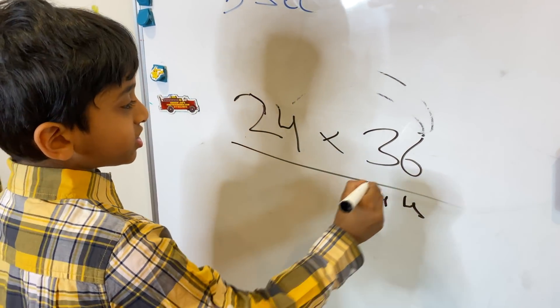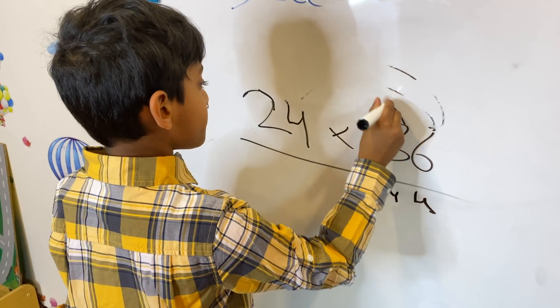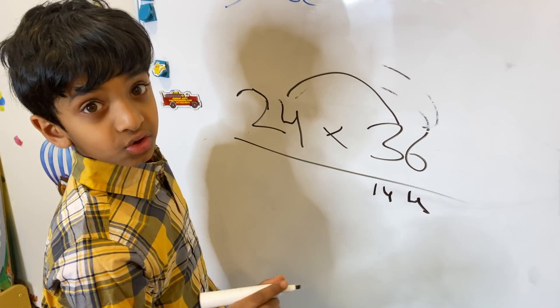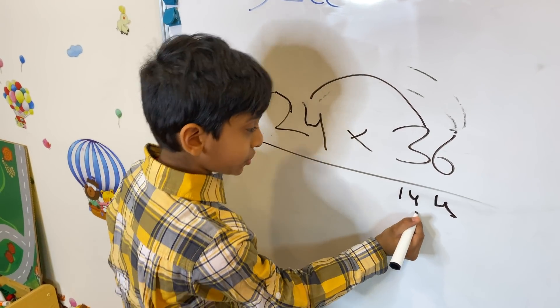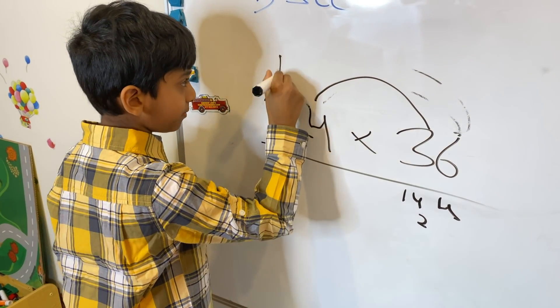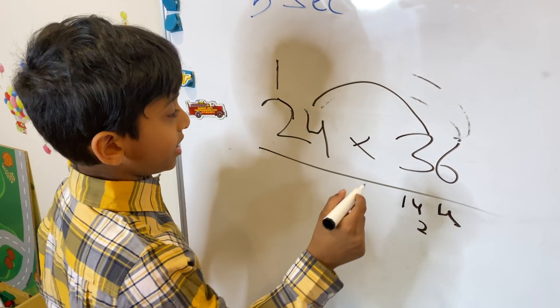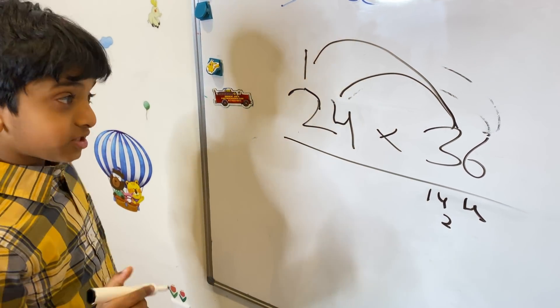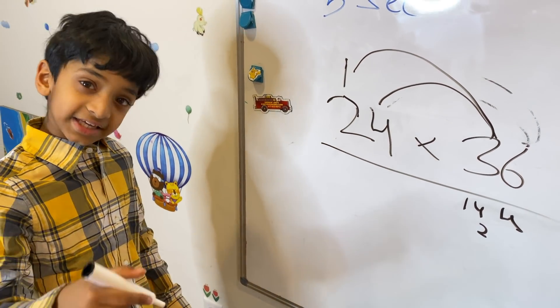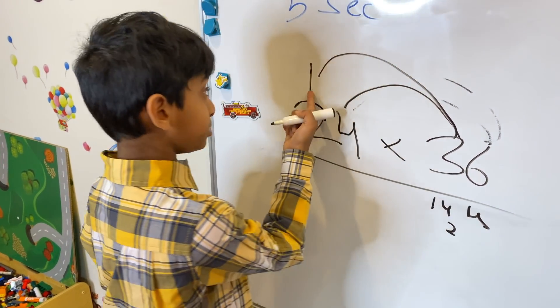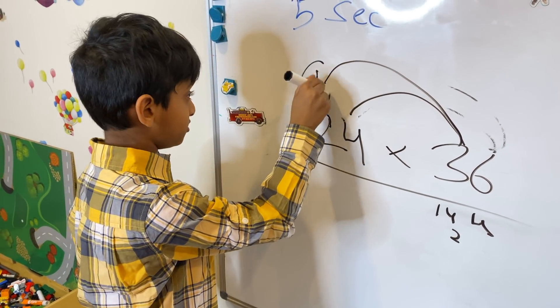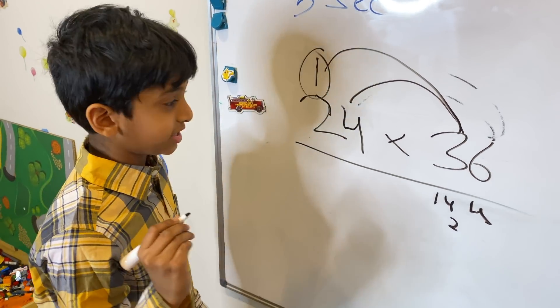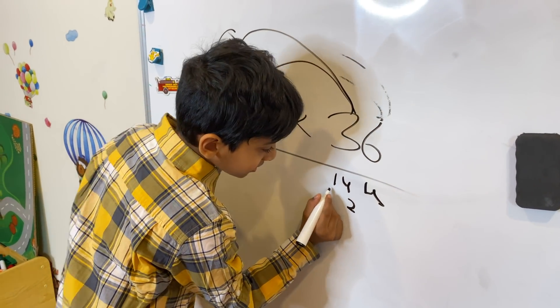Let me get my eraser and erase the top lines while we get to the next number. Now we have to do 3 times 4, which is 12. So let's put the 2 here and the 1 up here. Now we have to do 3 times 2, which is 6. So 6 plus 1 because we have that 1 hanging up here. 6 plus 1 is 7.